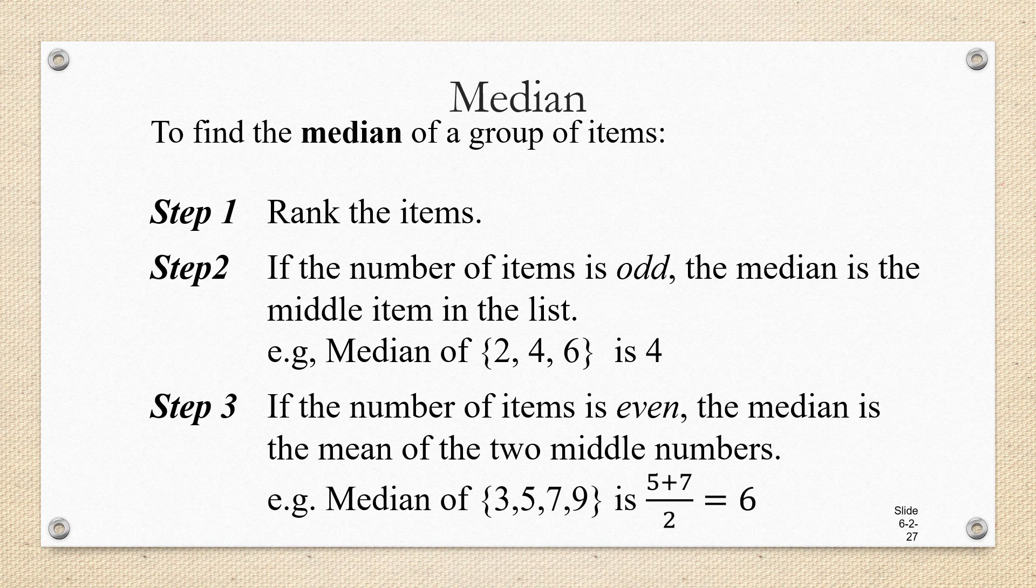If the number of items is even, then the median is the mean of the two middle numbers. For example, in the set 3, 5, 7, 9, there are 4 data values. 5 and 7 are in the middle, so we take the mean of the 2. 5 plus 7 over 2 is 12 over 2, which is 6.